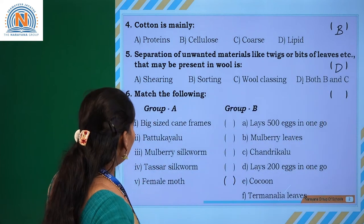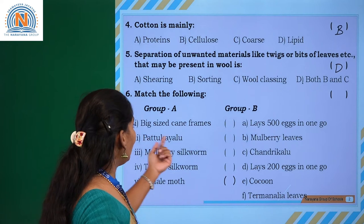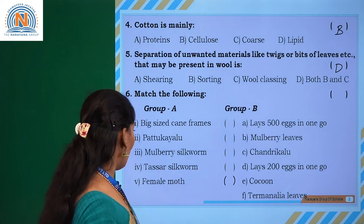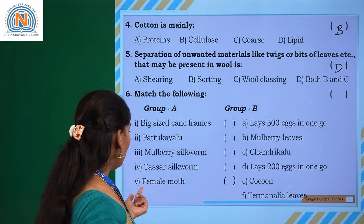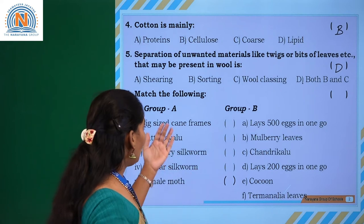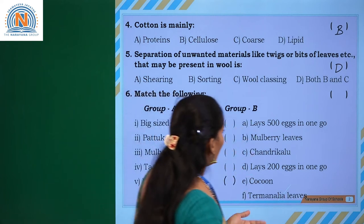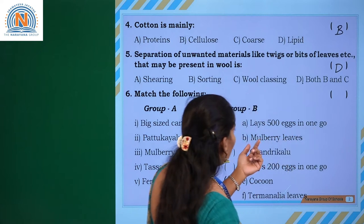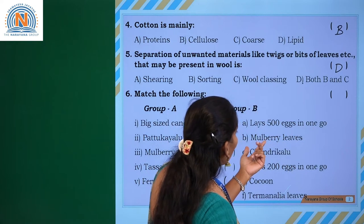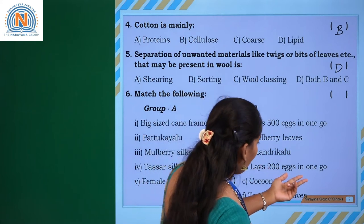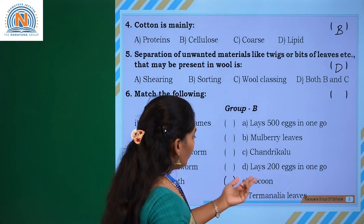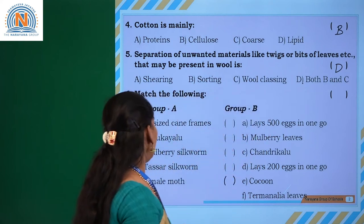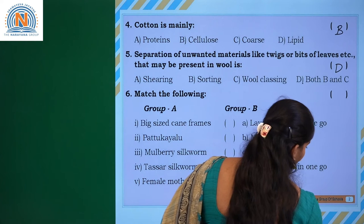Match the following: the items given are big sized cane frames, pattukayalu, mulberry silkworm, tussar silkworm, and female moth. The matches are: lays 500 eggs in one go, mulberry leaves, chandrikalu lays 200 eggs in one go, and terminalia leaves.